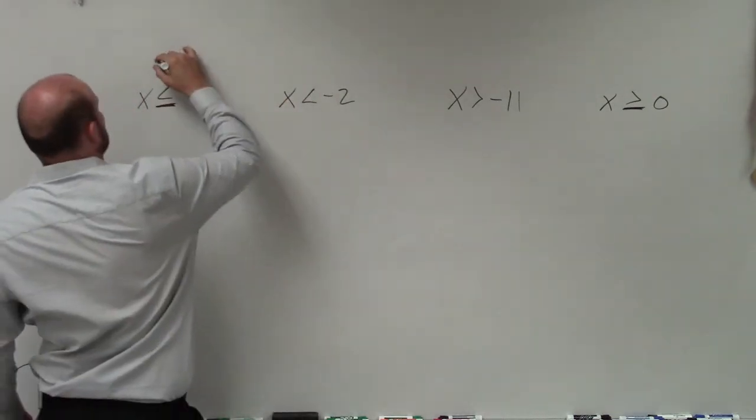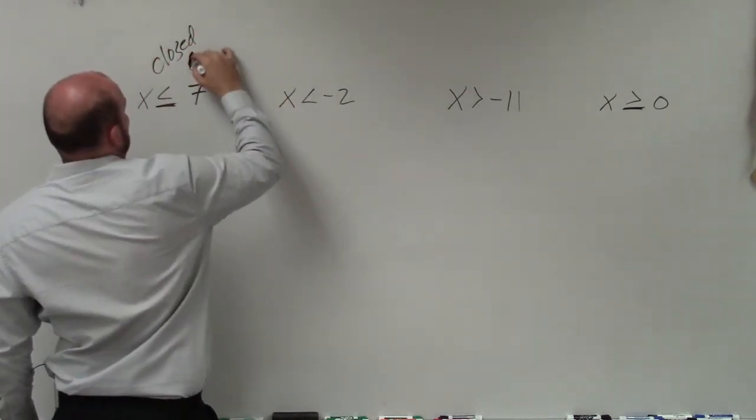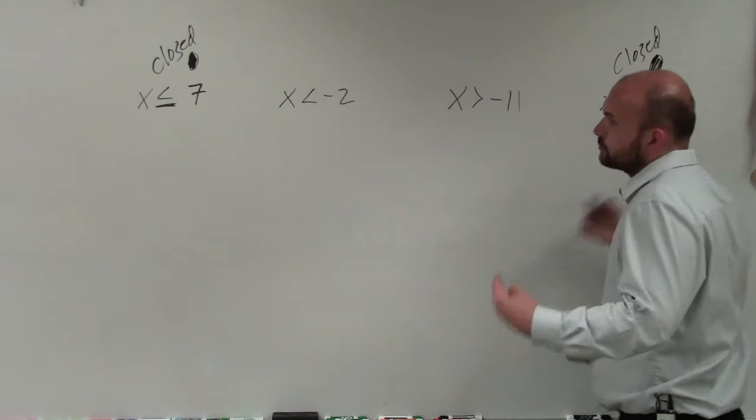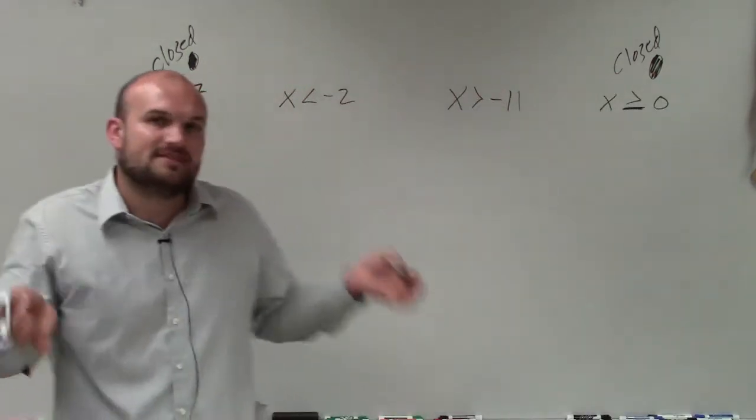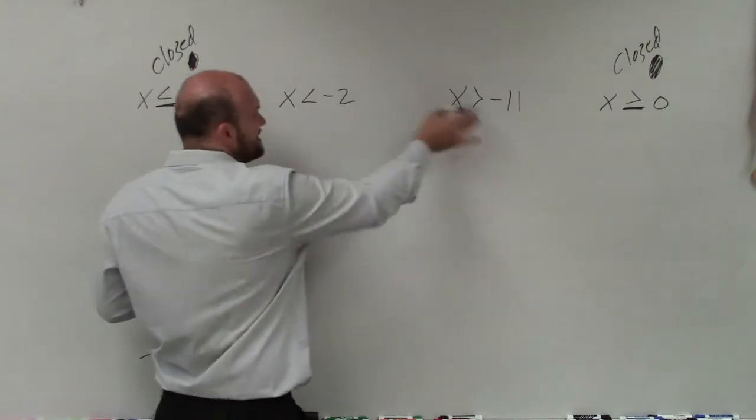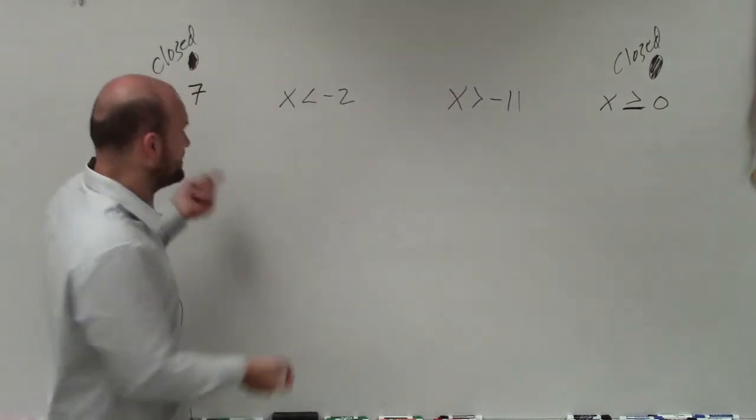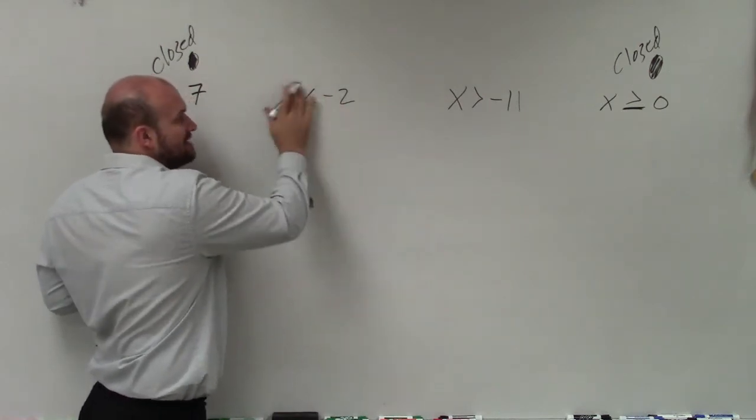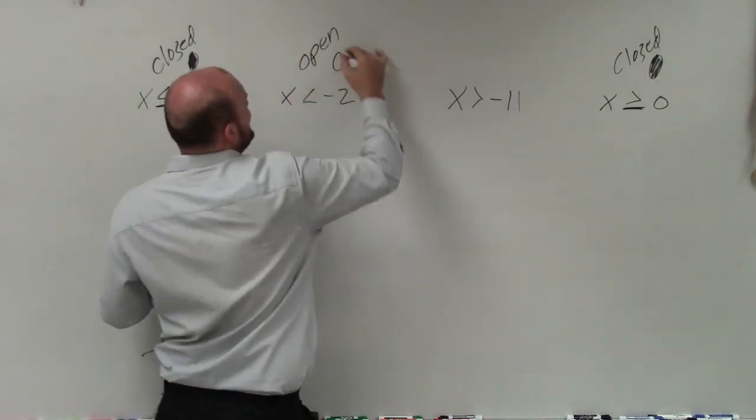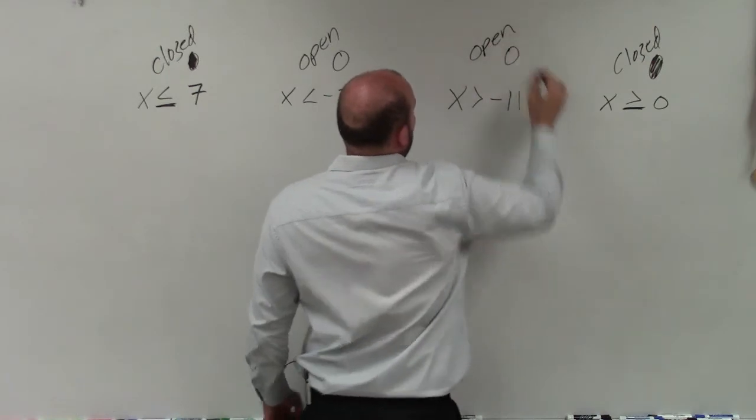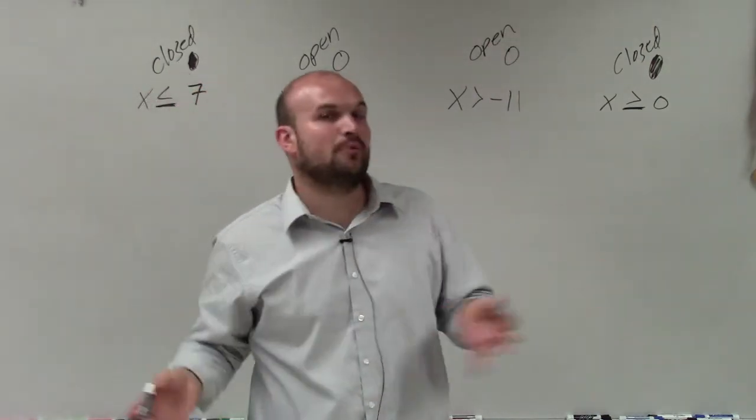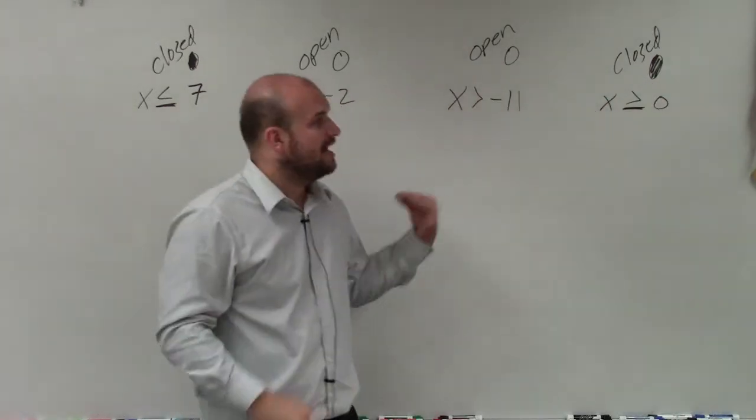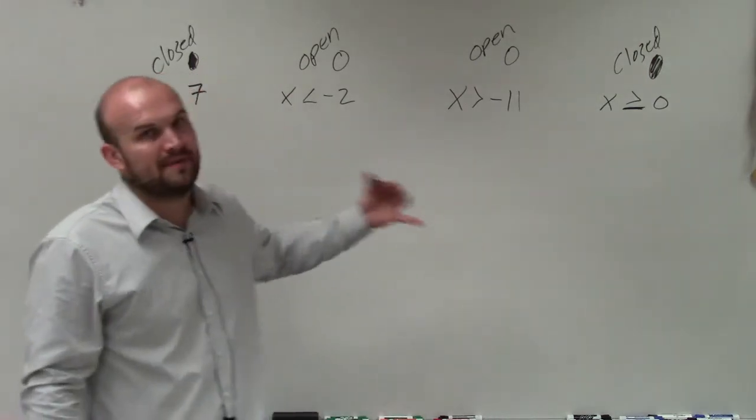So that is what we call a closed point. When we have less than or greater than or equal to, the value that we solve for is going to be a part of our solution. When we just have less than or greater than, the value is not a part of our solution. Let's pretend we had negative 2 here. Is negative 2 less than negative 2? No, negative 2 is equal to negative 2. Therefore, it's what we call an open point. It's not a part of our solution. Understanding if it's open or closed is very important. A lot of students get it mixed up, and it really is just based on using what the inequality symbol is. We can also determine that by testing.